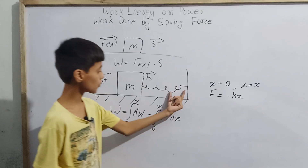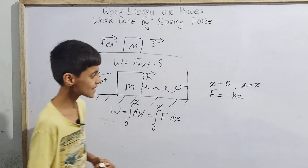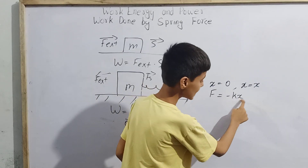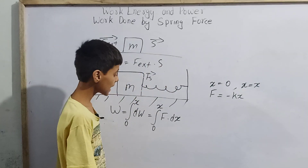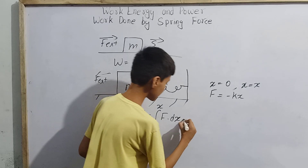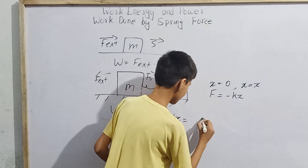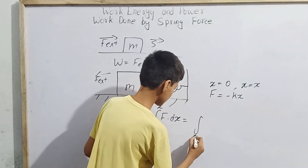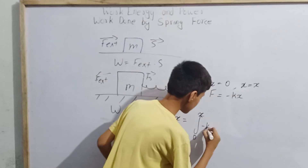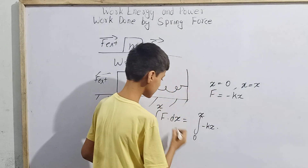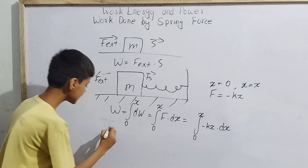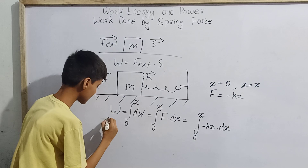According to Hooke's Law, the spring force is F = -kx, where k is our spring constant and x is our displacement. Substituting this, we get: integral from 0 to x of dW = integral from 0 to x of (-kx) · dx.